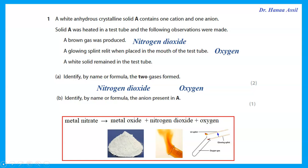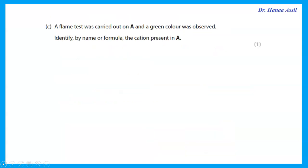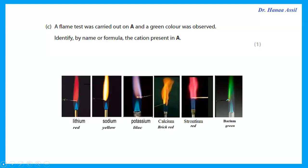Identify the anion present: that means we started with something nitrate. A flame test was carried out on A and a green color was observed. Identify the cation present — a green color in a flame test would be due to barium ions.